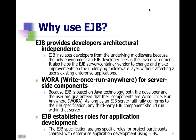Enterprise Java Beans also provide independence among application development. We have a write-once, run-anywhere philosophy for server-side components — because EJB is based on Java technology, developers and users are guaranteed their components are write once, run anywhere, as long as the server faithfully conforms to the specifications. EJB also establishes roles for application development: for example, the database bean handles connections to the database, the file server bean handles the file server, providing a central access point for central management.